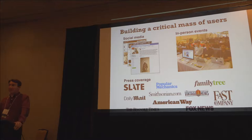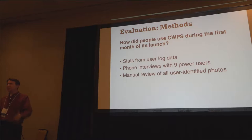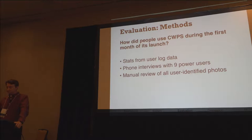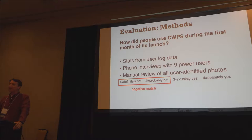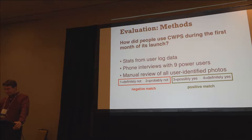This site was launched back in August, and our analysis for this paper looked at the first month of usage. We looked at log data of people using the site, conducted interviews with nine of the most active users, and did a manual inspection of the photos proposed as identifications. For each possible match, we had a rating between one and four, with the first two ratings considered a negative match — probably not the right person — and the latter two being a positive match, a decent chance of being the correct identification.